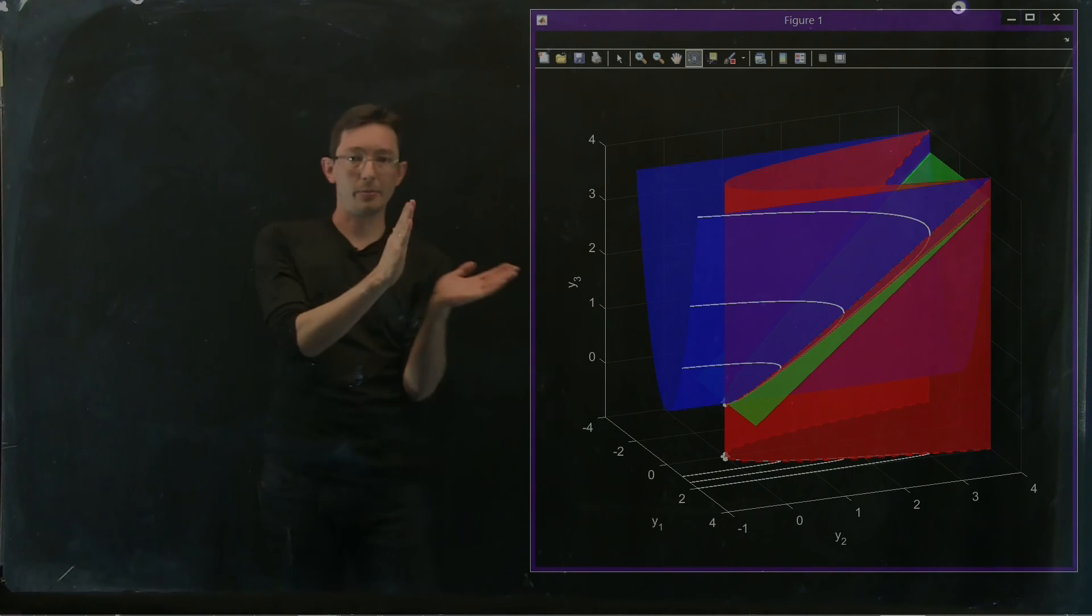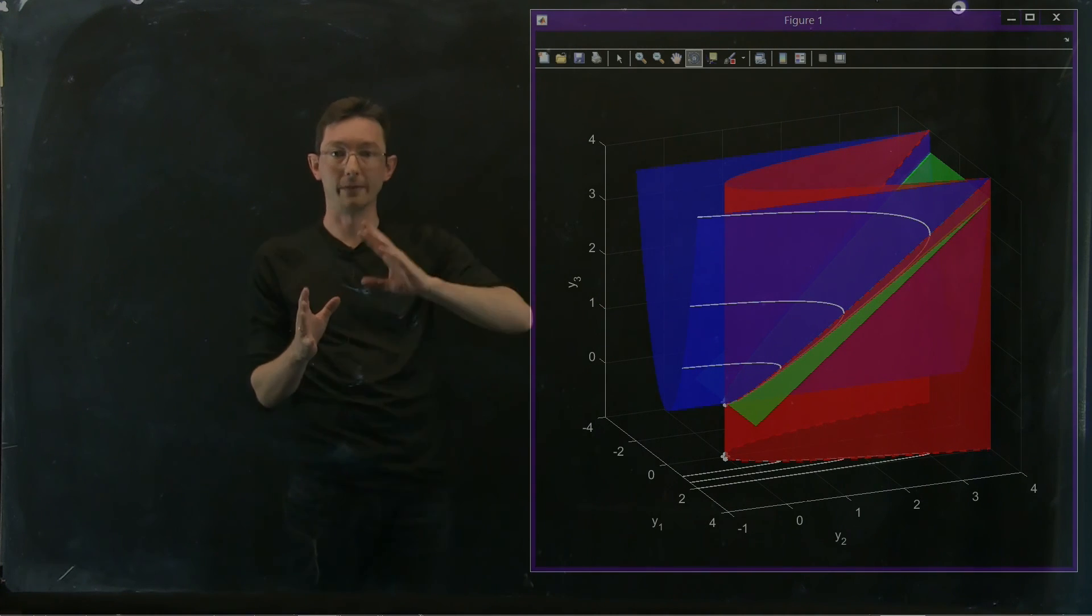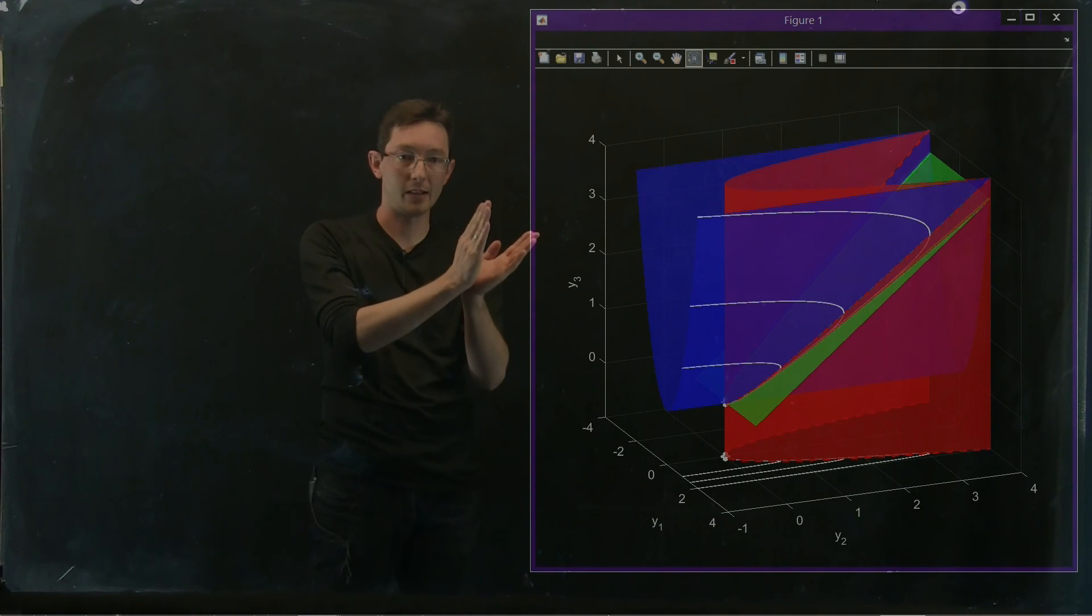So that's kind of cool. You can actually play around with this in the code and make it faster or slower, and you'll see these things become more aligned or less aligned.